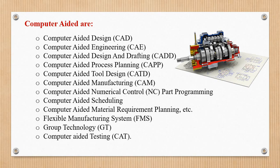The CAD/CAM field includes: Computer Aided Design (CAD), Computer Aided Engineering (CAE), Computer Aided Design and Drafting (CADD), Computer Aided Process Planning (CAPP), Computer Aided Tool Design, Computer Aided Manufacturing (CAM), Computer Aided Numerical Control (CNC) part programming, computer aided scheduling, MRP, Flexible Manufacturing Systems (FMS), group technology, and computer aided testing.